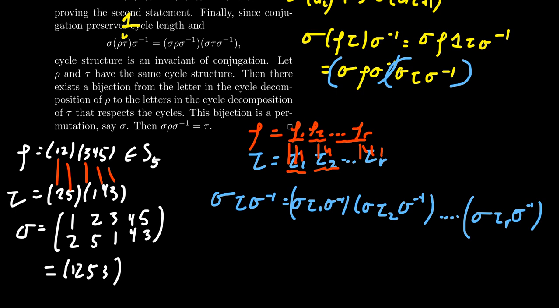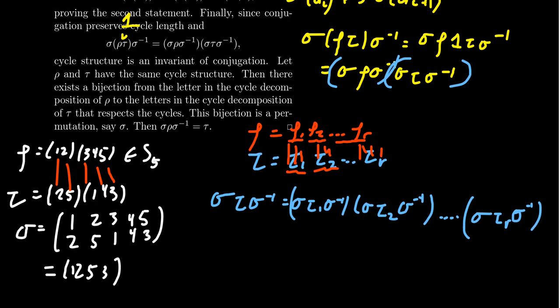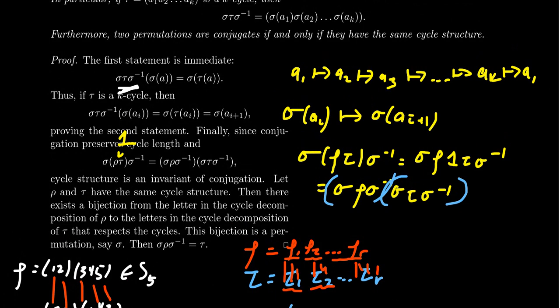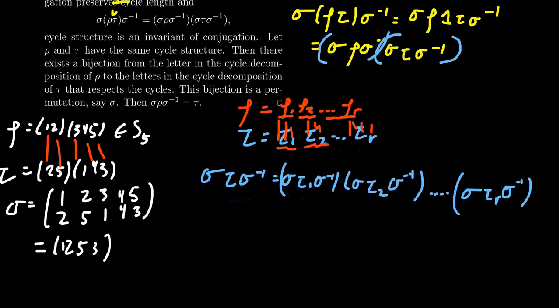So that bijection we call sigma. By the construction of sigma, we see that sigma rho sigma inverse is going to equal tau, which follows from our earlier observations. When you make this construction, it connects the cycles together — proving that if you have the same cycle structure, this bijection gives you the conjugator you need. Let's verify it for this example: sigma rho sigma inverse, where sigma is (1,2,5,3), rho is (1,2)(3,4,5), and sigma inverse is (3,5,2,1).